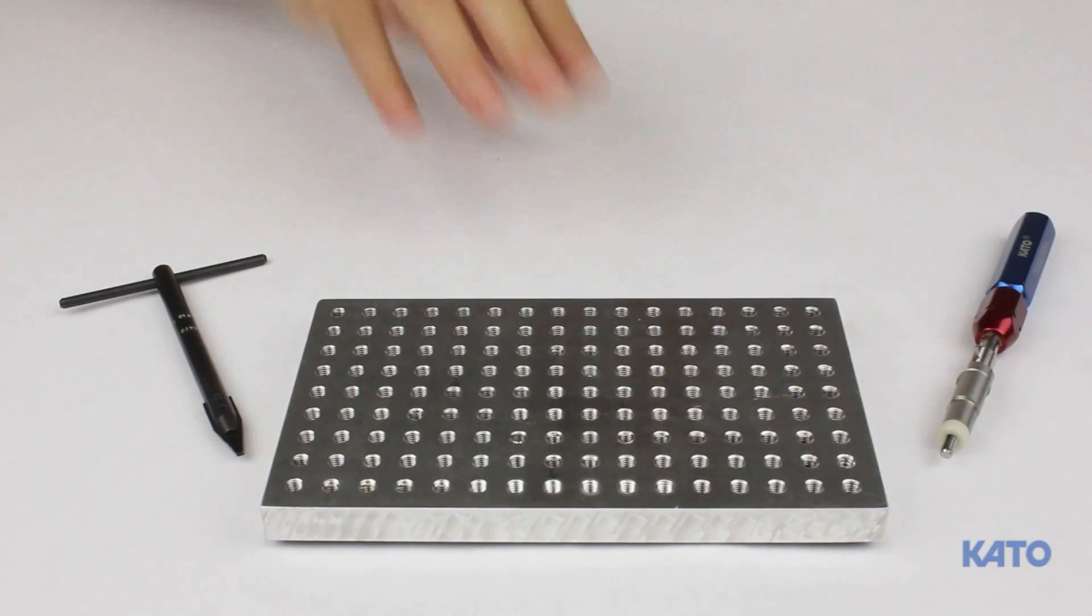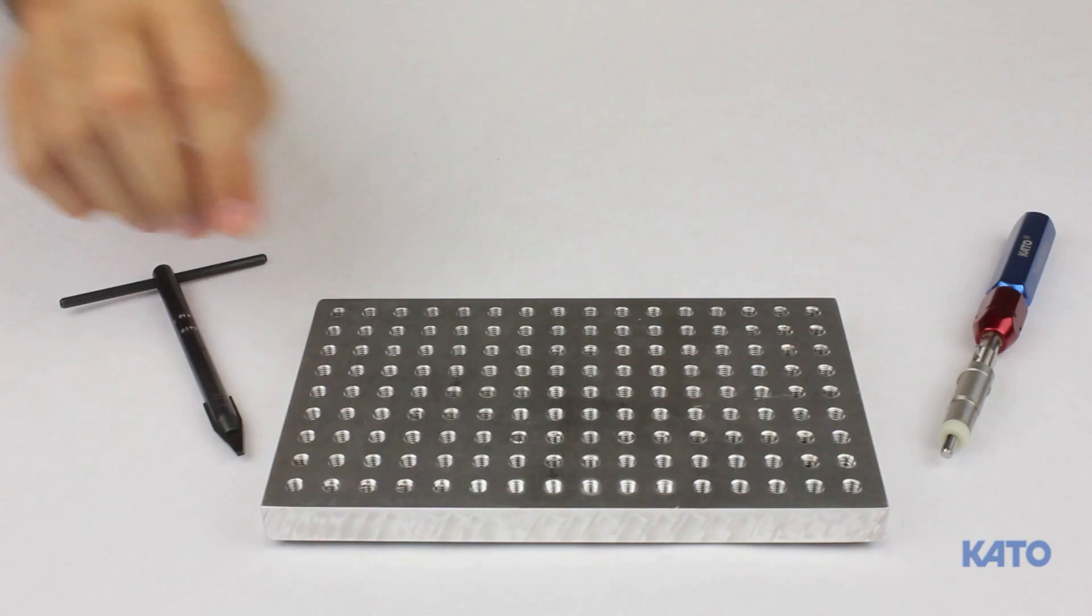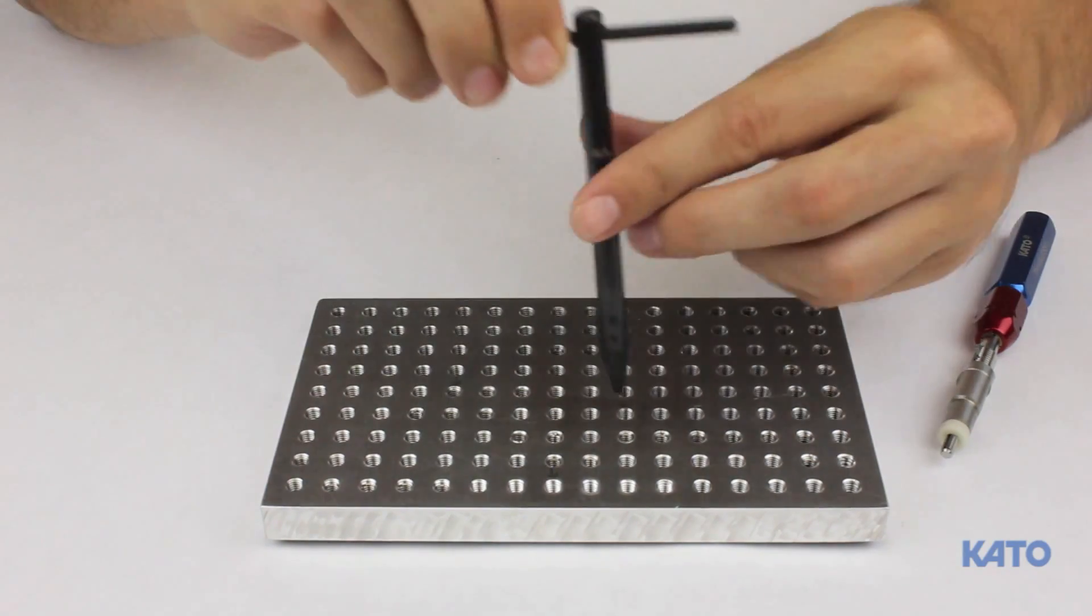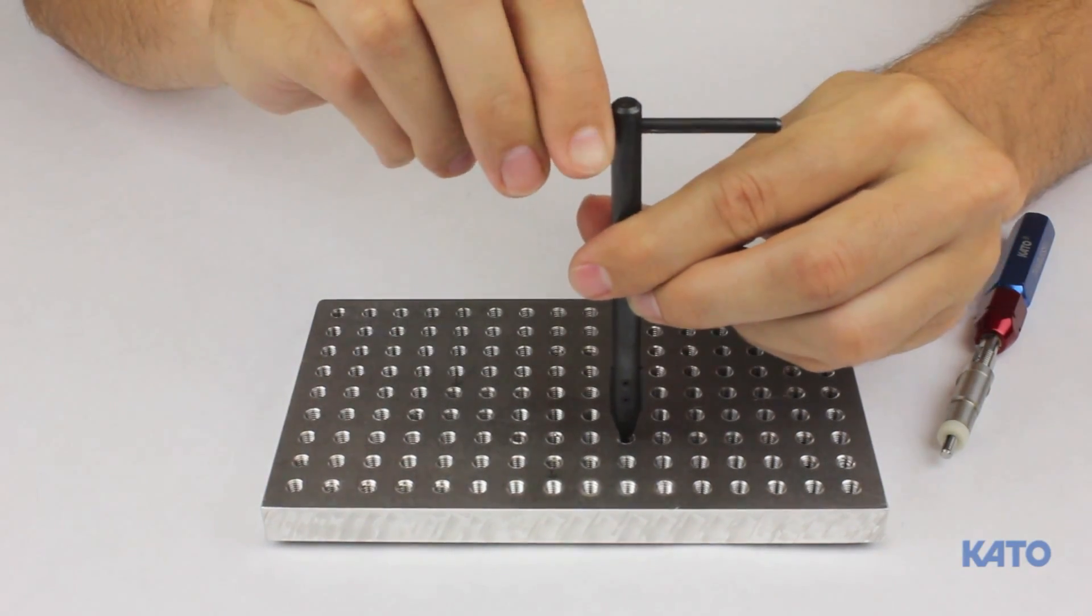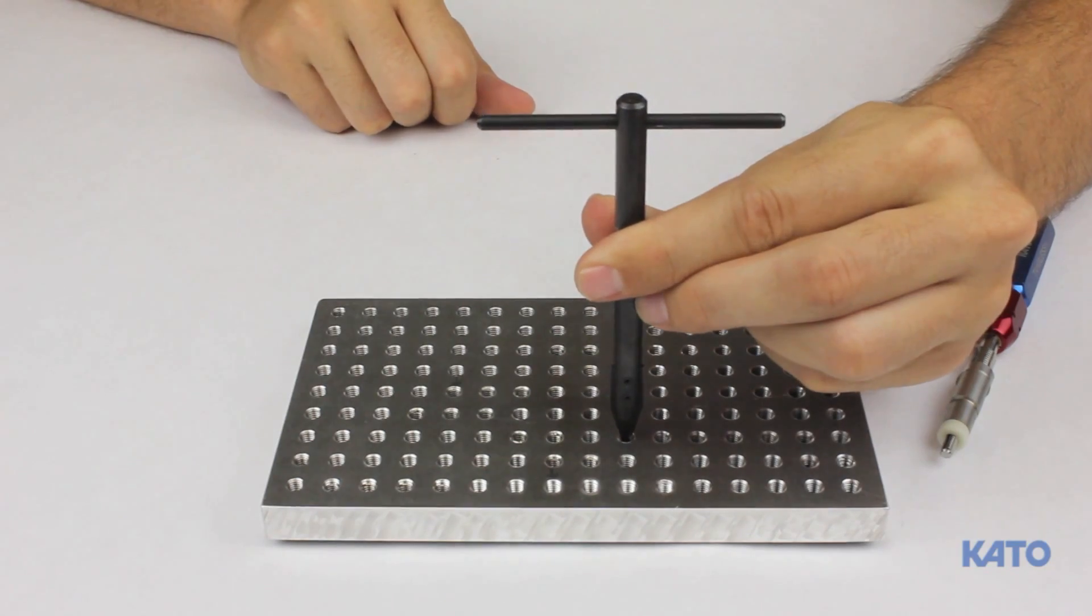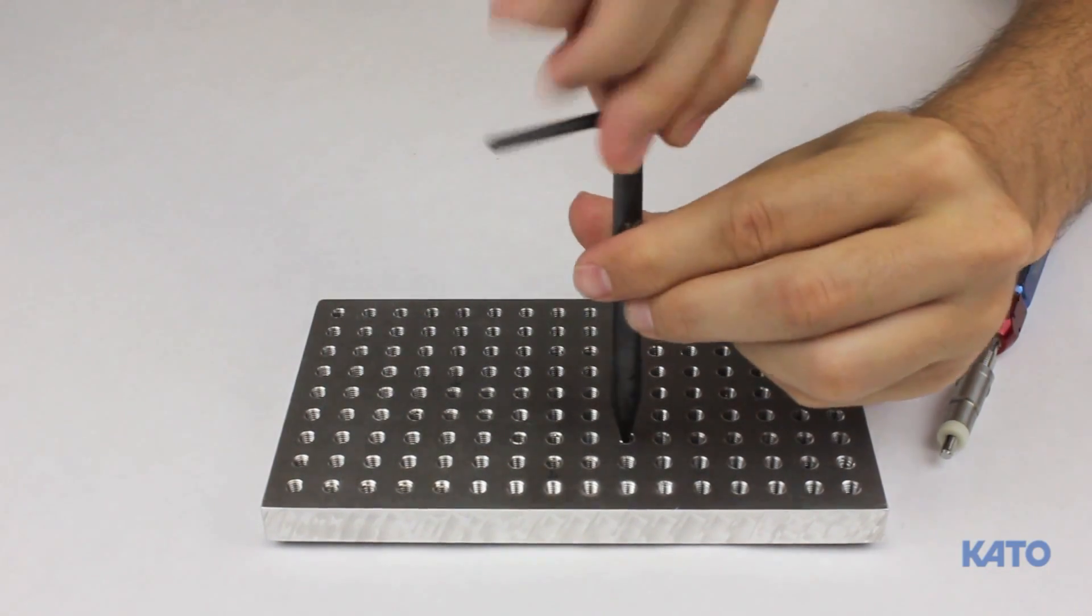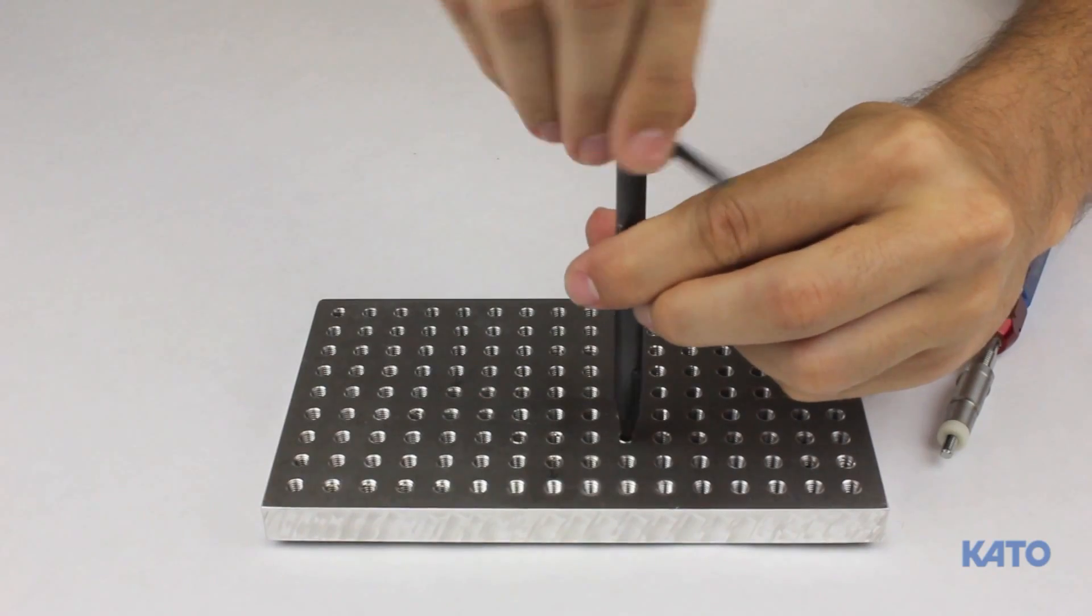We've set up a test block with some coil thread inserts already installed. First we'll demonstrate how to use the Tanged Extraction Tool. Place the tool in the installed insert, and while pressing down firmly, turn the tool counterclockwise, maintaining downward pressure.